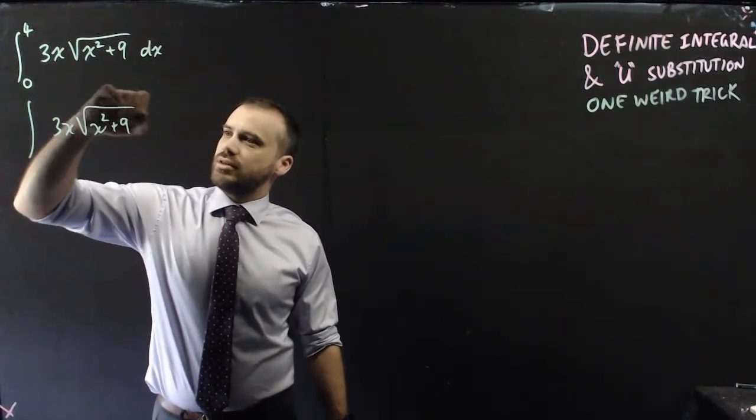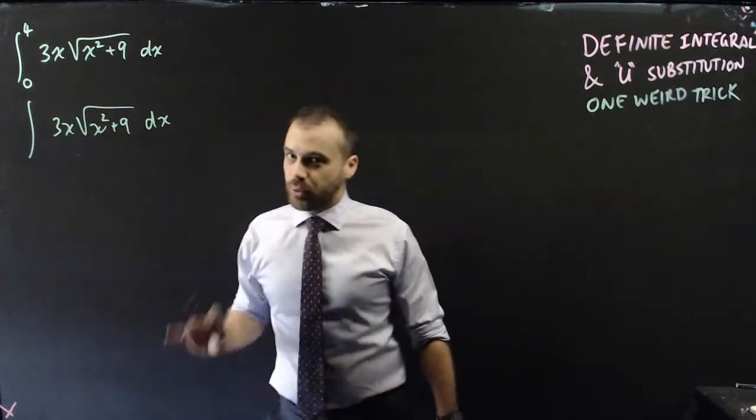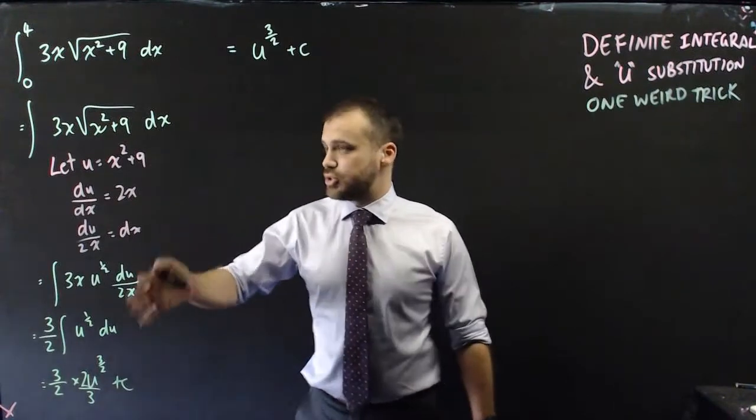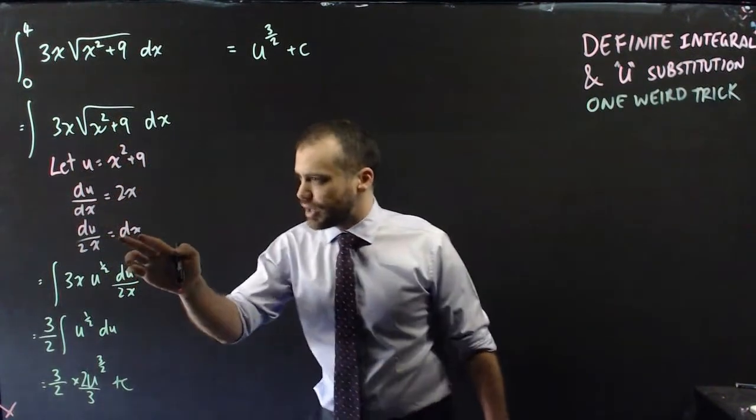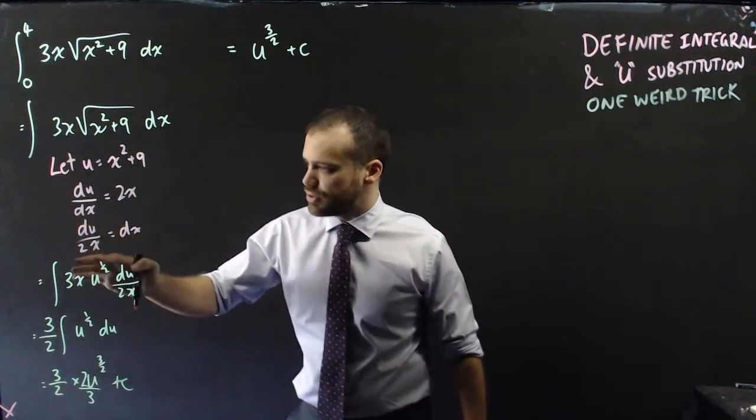So I'm going to integrate this up to a point. So all of that's our u substitution, we let this equal u, we found the derivative, we rearranged it, so dx equals du over 2x.